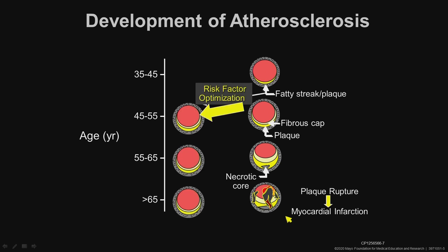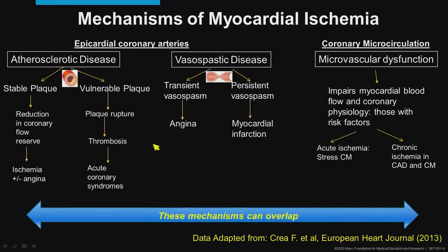Obviously, our goal is to have risk factor optimization so we never have this progression of plaque or plaque rupture. But clearly lots of people still present with a heart attack with the classic reason for that presentation. Traditional heart disease is atherosclerotic, meaning plaque from cholesterol and other risk factors — stable plaque presenting with chest pain, or a plaque that's rupturing and occluding that artery, which is the acute coronary syndrome presentation.